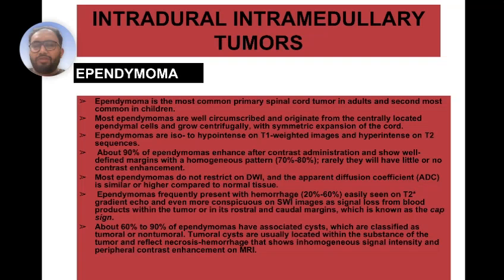About 60–90% of ependymomas have associated cysts, classified as tumoral or non-tumoral. Tumoral cysts are usually located within the substance of the tumor and reflect necrosis and hemorrhage, showing inhomogeneous signal intensity and peripheral contrast enhancement on MRI.